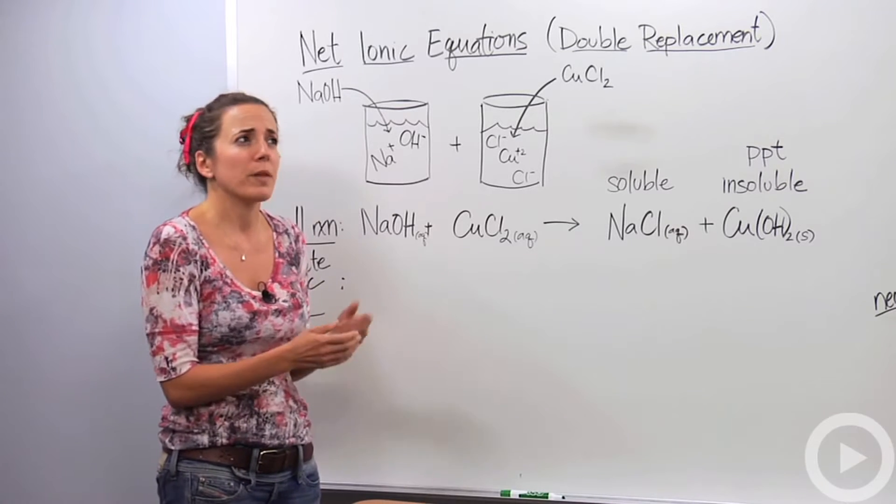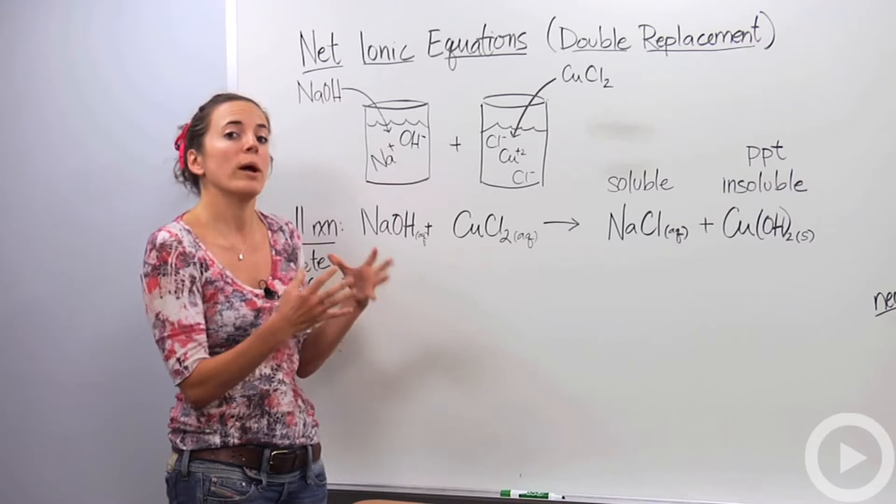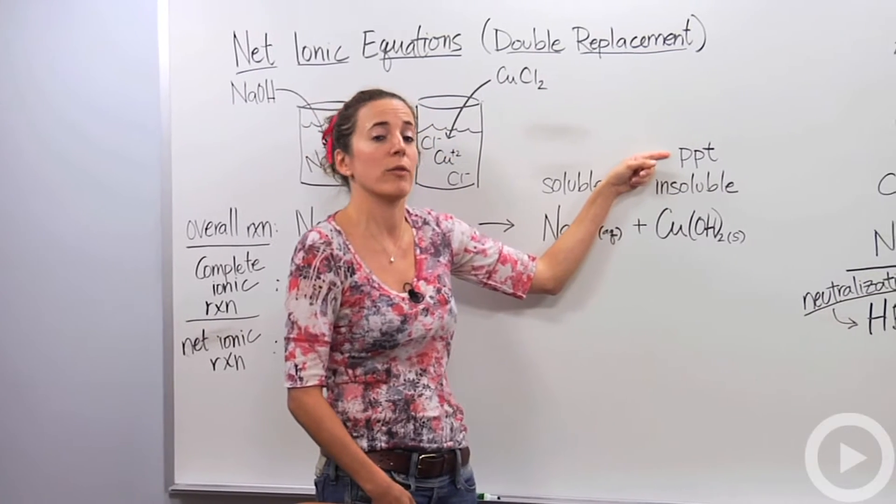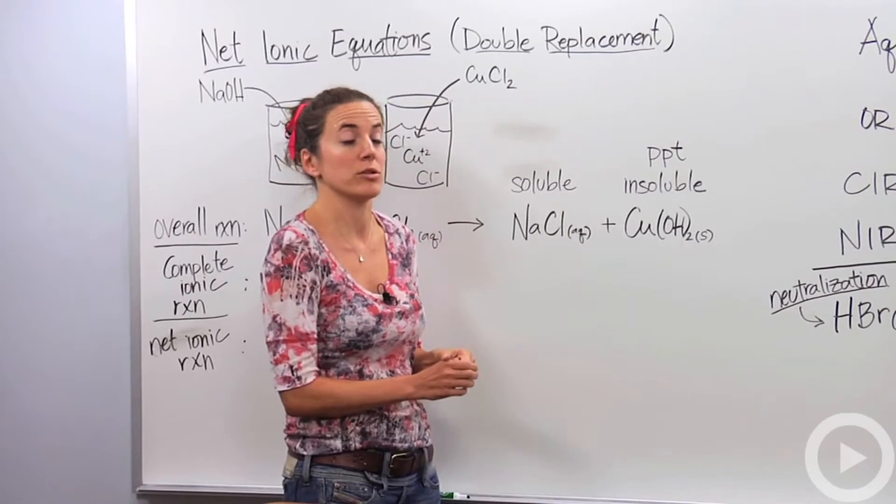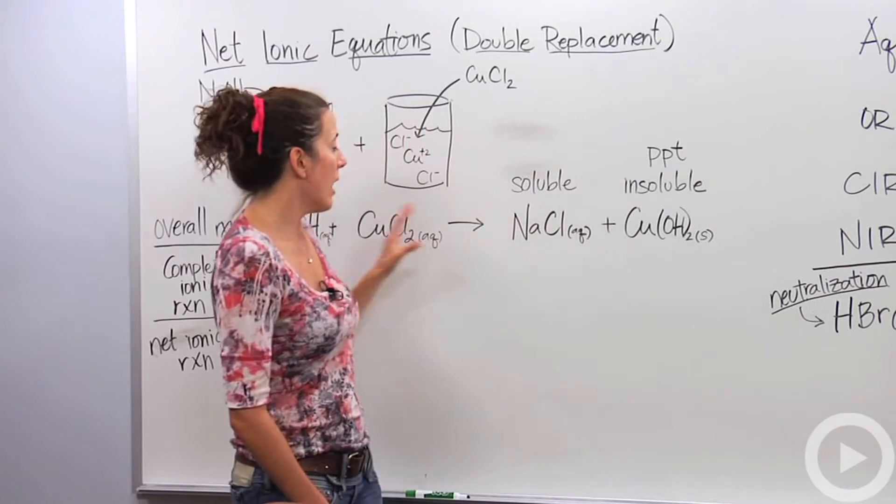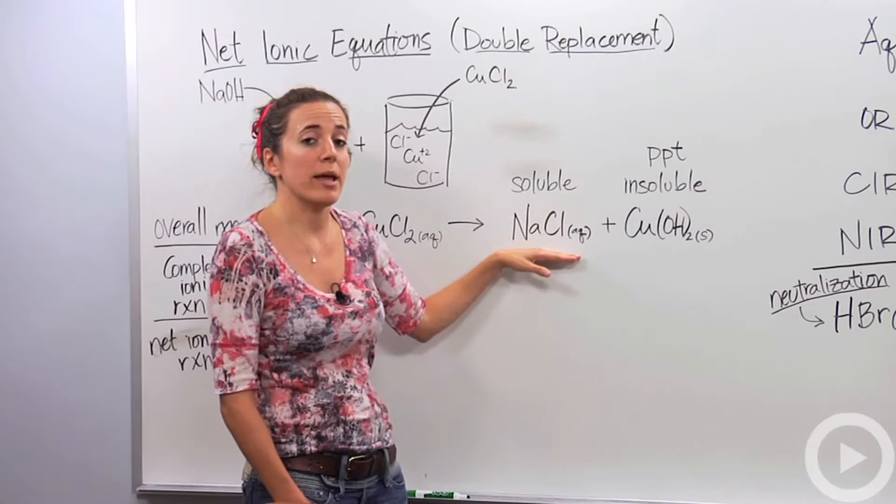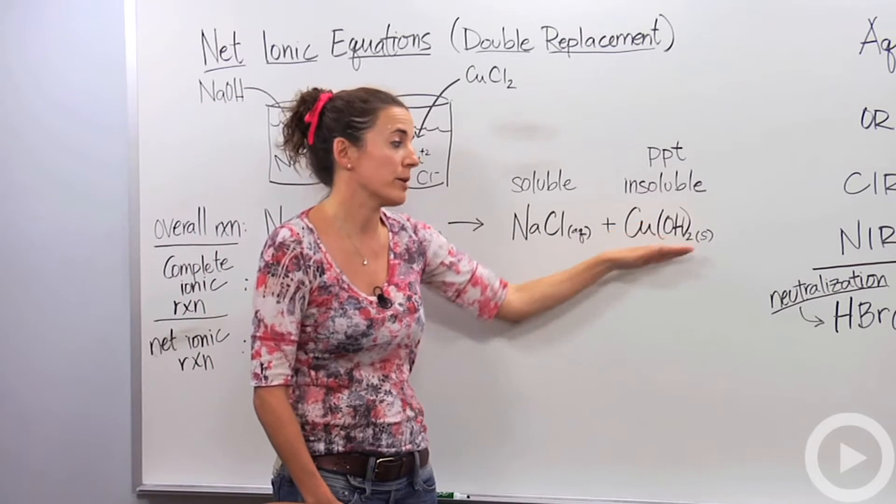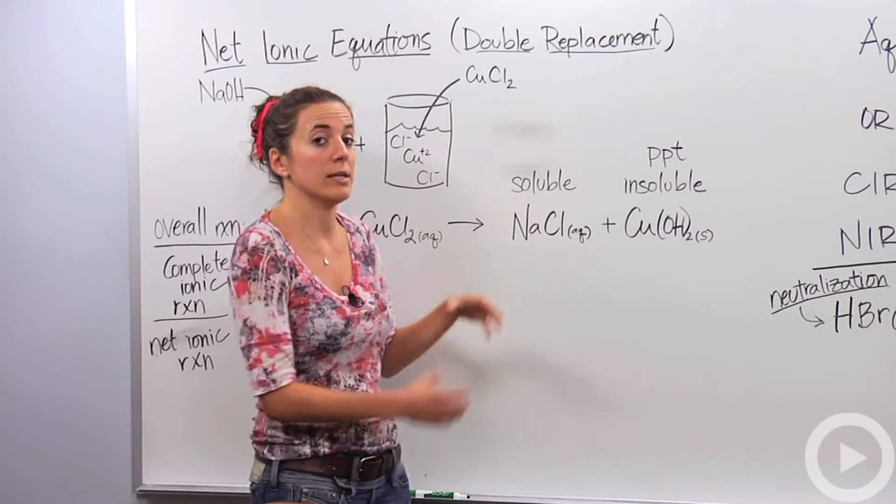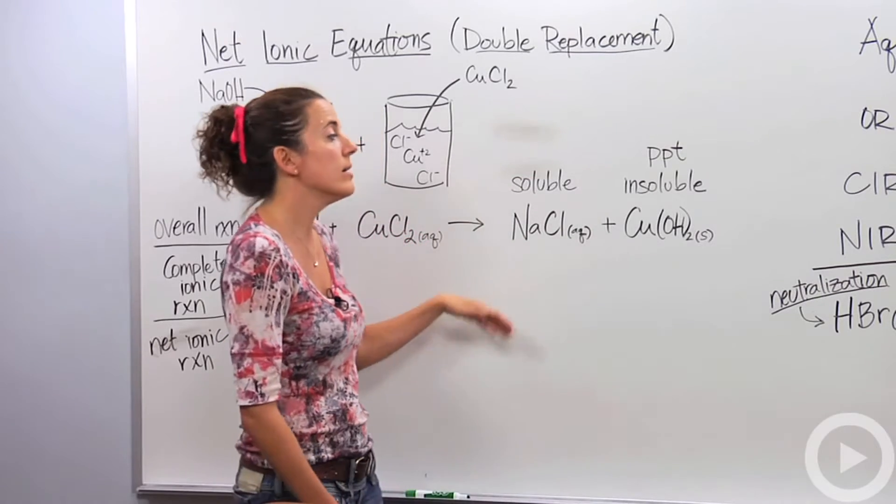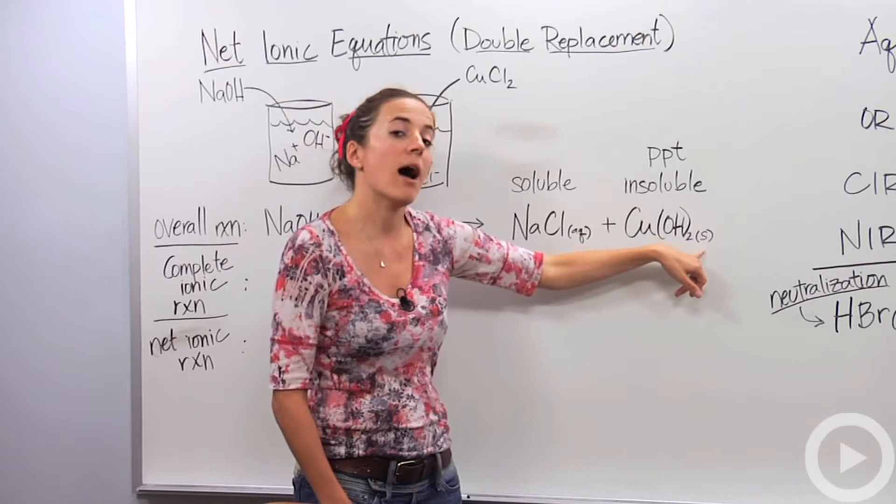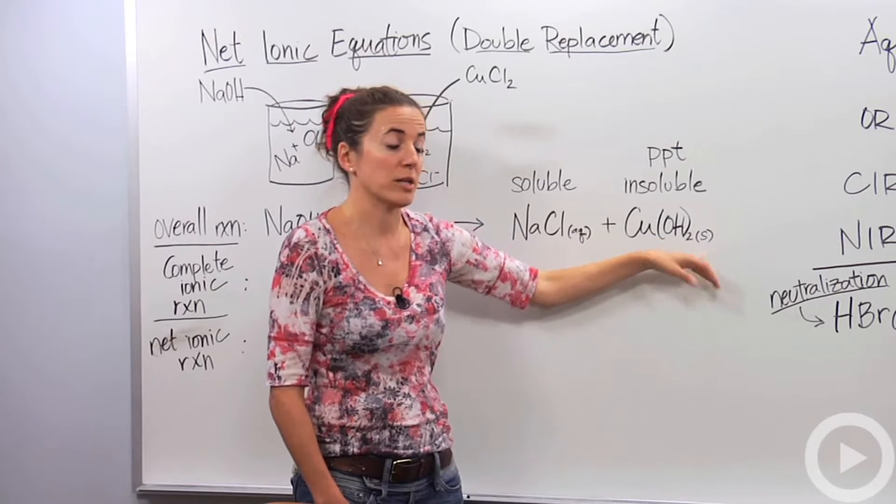You probably have a solubility chart that your teacher might have given you that tells you what actually makes a precipitate. A simpler way of writing precipitate instead of having to write the whole word is PPT. Within this reaction, this is going to still be aqueous, and this is going to be our actual precipitate. NaCl, the product, is soluble, meaning it will break up into its ions. This is going to be insoluble, meaning it's going to be the solid. This is actually going to stay together.